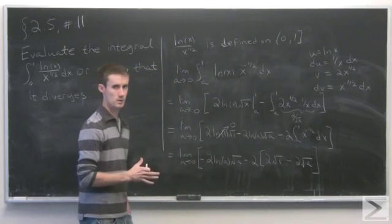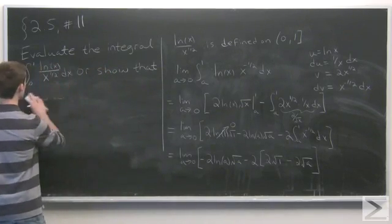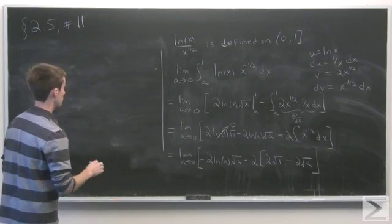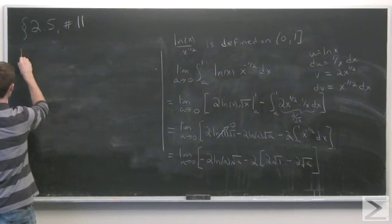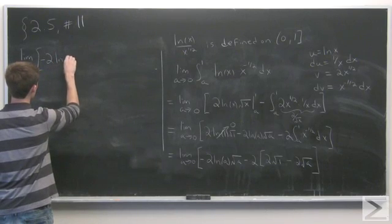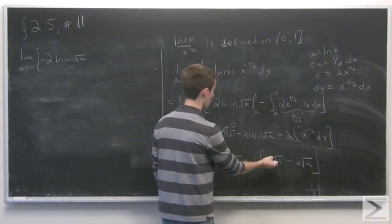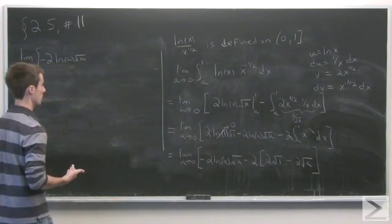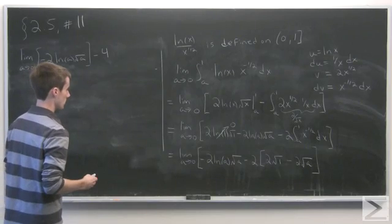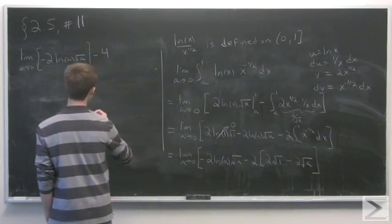Now we just have to evaluate this limit and see if it exists or if it diverges. By linearity, this breaks into: the limit as a goes to 0 of negative 2 times natural log of a times square root of a, plus the limit as a goes to 0 of negative 2 times square root of 1, which is just negative 4 — a constant. And the limit as a goes to 0 of 2 times square root of a is, of course, just 0.